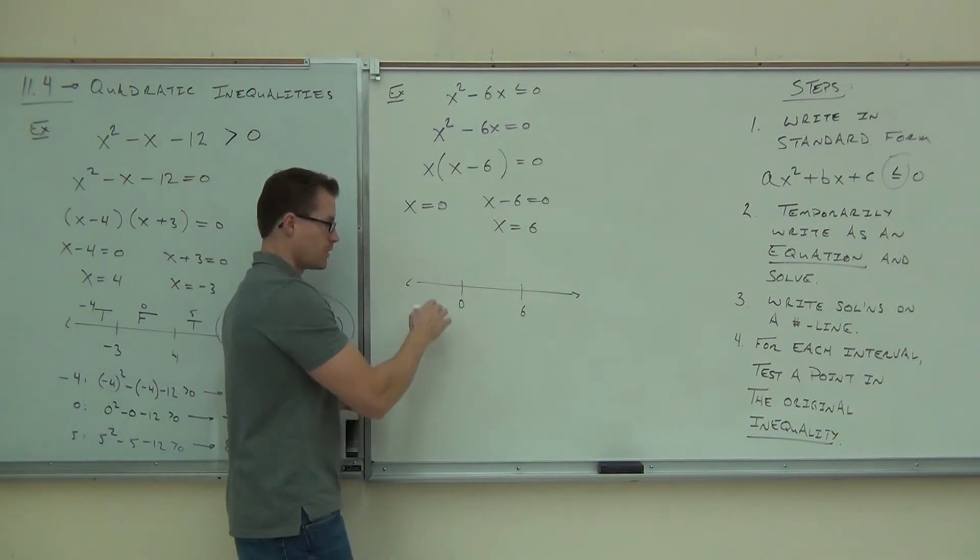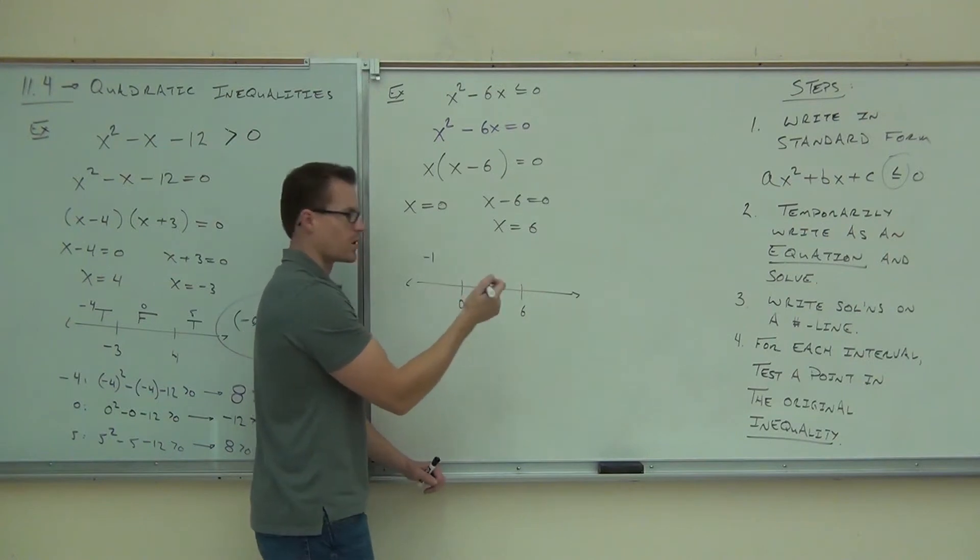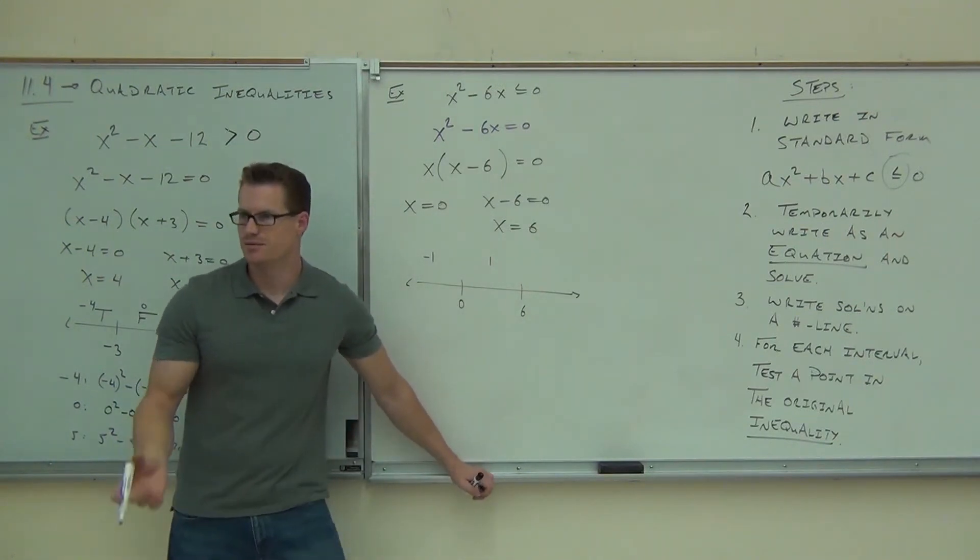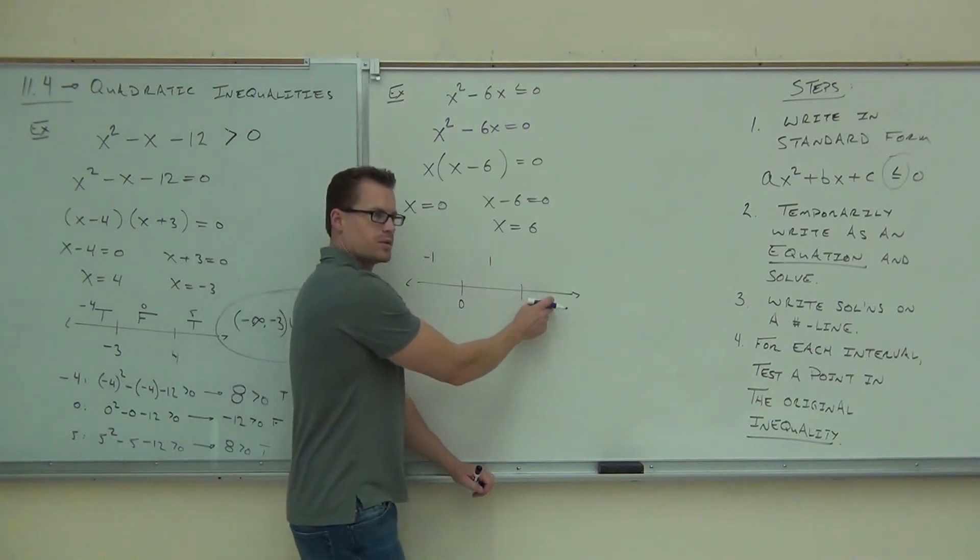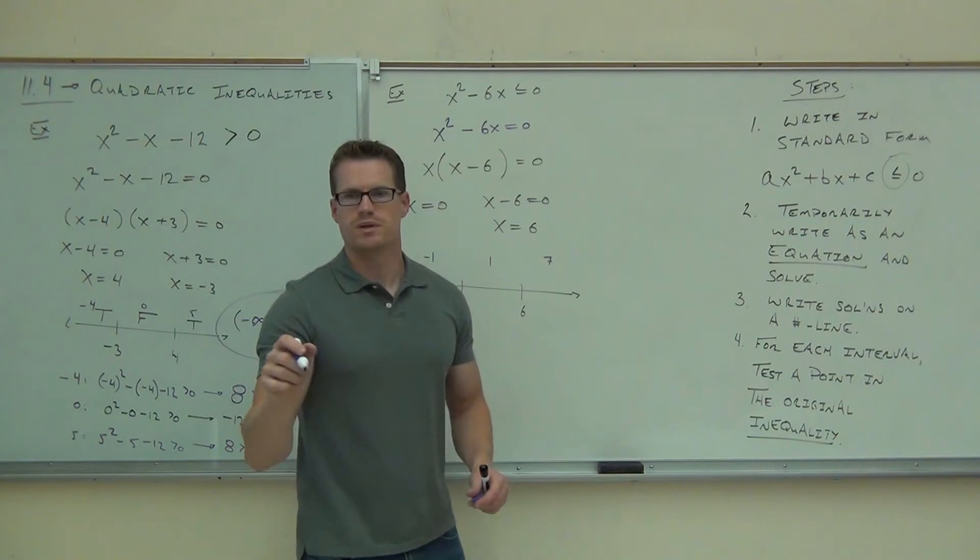One. Over here? Negative. And here? One. Anything you want. I'd probably pick one because it's easier for me. And then over here, what are you going to pick? Seven. Why don't you try those points for me and see if they work, okay?